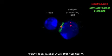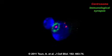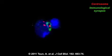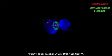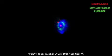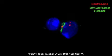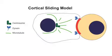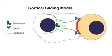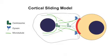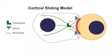When a T cell encounters an antigen-presenting cell, it moves its centrosome to the immunological synapse connecting the two cells in order to direct the secretion of effector molecules toward their target. Centrosome repositioning is thought to be driven by a cortical sliding mechanism in which dynein motors anchored at the periphery of the immunological synapse pull on microtubules emanating from the centrosome.